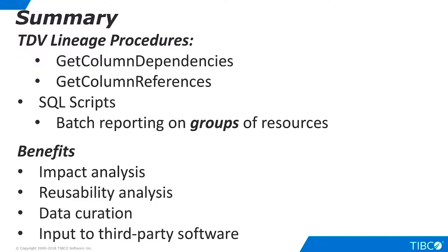Let's summarize what we have seen in this presentation. TDV ships with two stored procedures that form the basis of its data lineage reporting capability. GetColumnDependencies provides a column-by-column report of the upstream data lineage of a TDV resource. GetColumnReferences provides a similar report of downstream data lineage. It is easy to build SQL scripts that allow us to report on meaningful groups of resources, and we can define these groups in any way that matters to our business. Data lineage reporting is important for many reasons: it enables impact analysis for schema changes, uncovering reusable TDV artifacts, data curation efforts, and as input to third-party software such as report generators. Thank you.